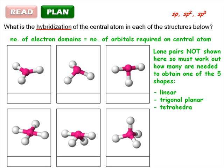Linear, trigonal planar, tetrahedral, trigonal bipyramidal, or octahedral. Then you can count bonds plus lone pairs and work out the hybridization.